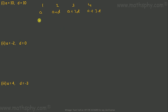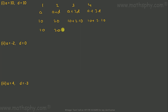So the first term would be A, which is 10. Second term would be A plus D: 10 plus 10 equals 20. Third term: A plus 2D means 10 plus 2 into 10, which is 30. Fourth term: A plus 3D is 10 plus 3 into 10, which is 40. So the terms are 10, 20, 30, and 40.